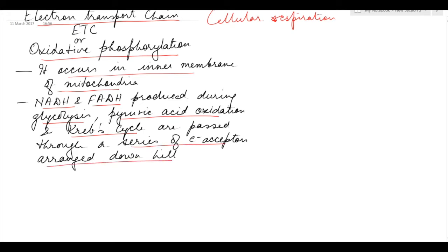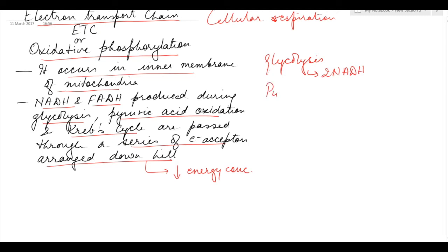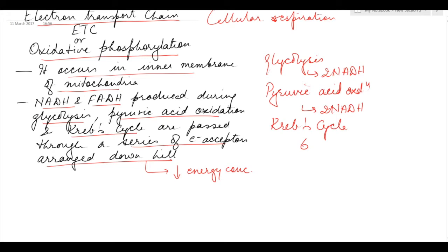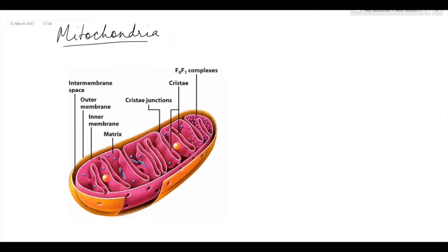These electron acceptors are arranged downhill, meaning in decreasing energy concentration. During glycolysis, 2 NADH are produced. During pyruvic acid oxidation, again 2 NADH are produced. During the Krebs cycle, 6 NADH and 2 FADH2 are produced. To understand better, let's go through the structure of the mitochondria.